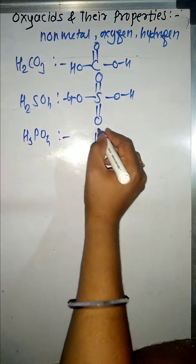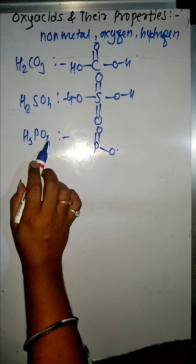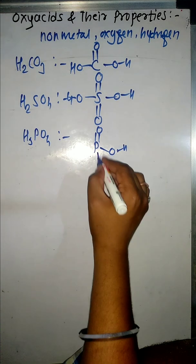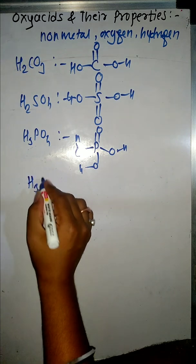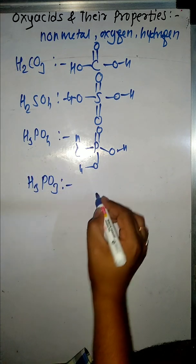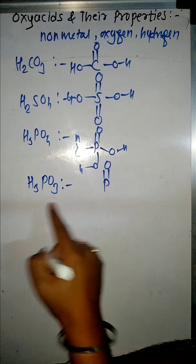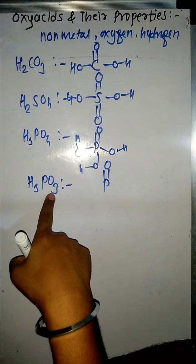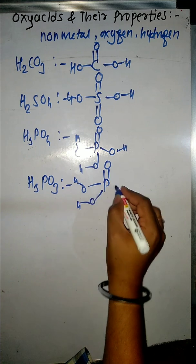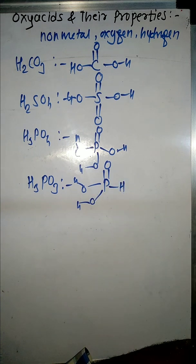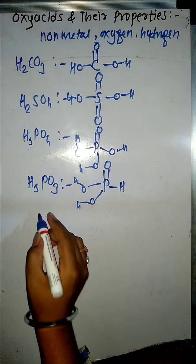Next is H3PO4, which is called orthophosphoric acid. The central atom is phosphorus. We write one double bond O first, then with 3 hydrogens and 4 oxygens, we get 3 OH groups. Next is H3PO3 — again the central atom is phosphorus. One double bond O is written first. Here there are 3 hydrogens but only 2 oxygens, so only 2 OH groups are formed, and the remaining 1 hydrogen is written directly on the central atom.